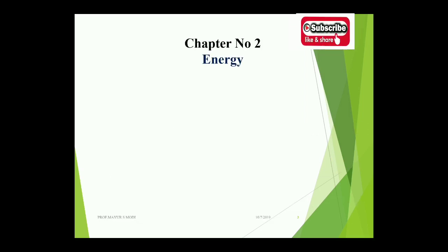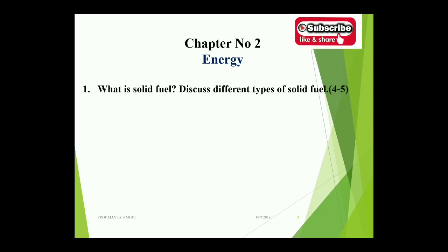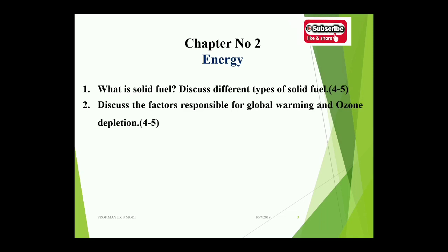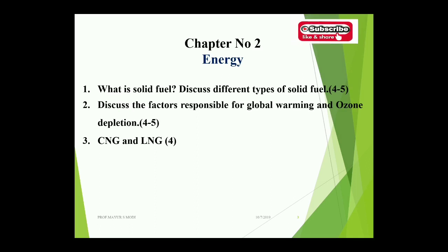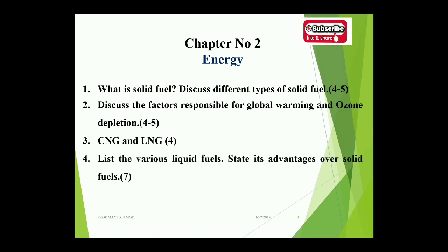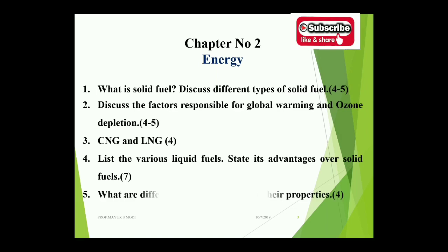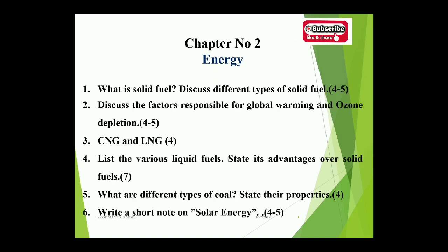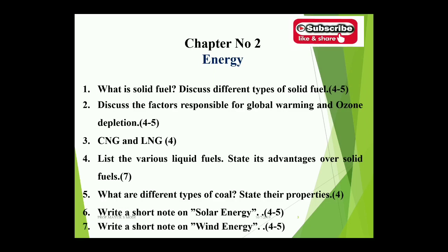Chapter two covers energy. Topics include: discuss different types of solid fuels, 4 to 5 marks. Discuss factors responsible for global warming and ozone depletion, 4 to 5 marks. CNG and LNG, 4 marks. List various liquid fuels and state their advantages over solid fuels, 7 marks. Different types of coal and their properties, 4 marks. Short note on solar energy, 4 to 5 marks. Short note on wind energy, 4 to 5 marks.